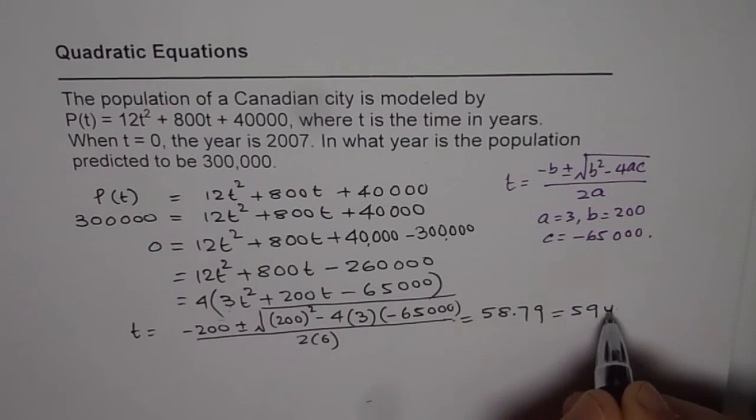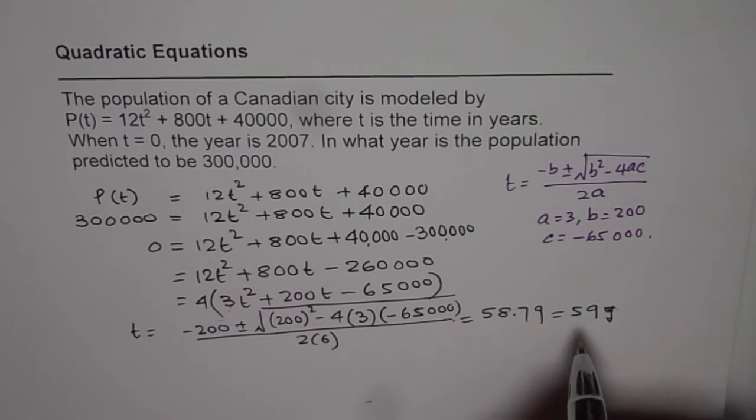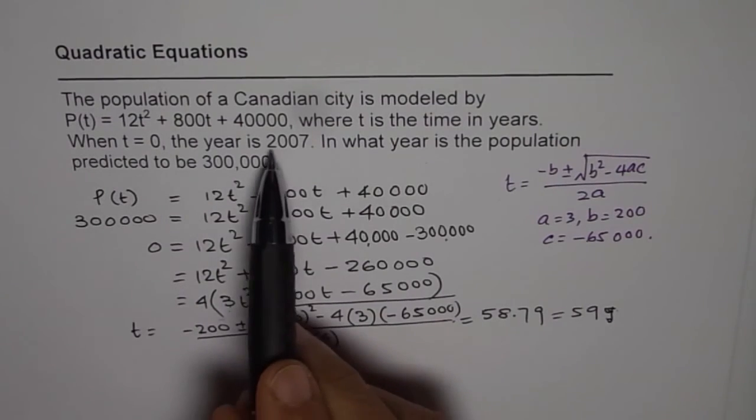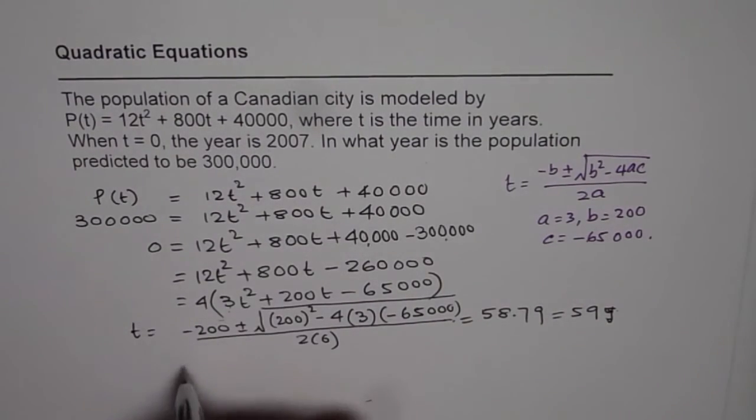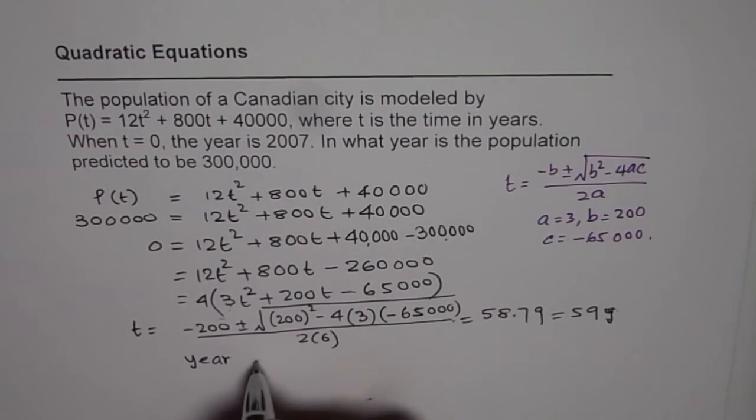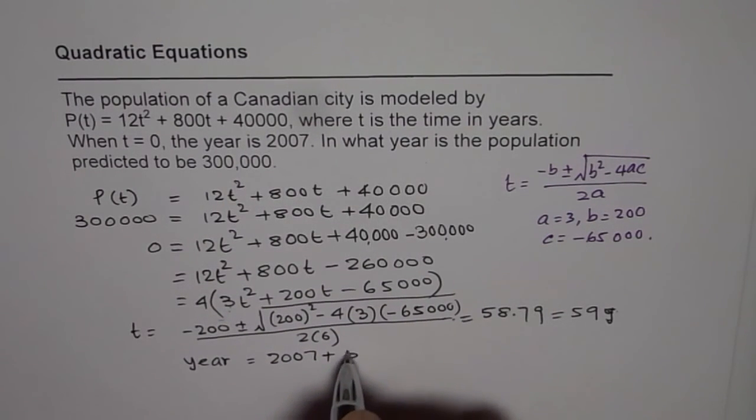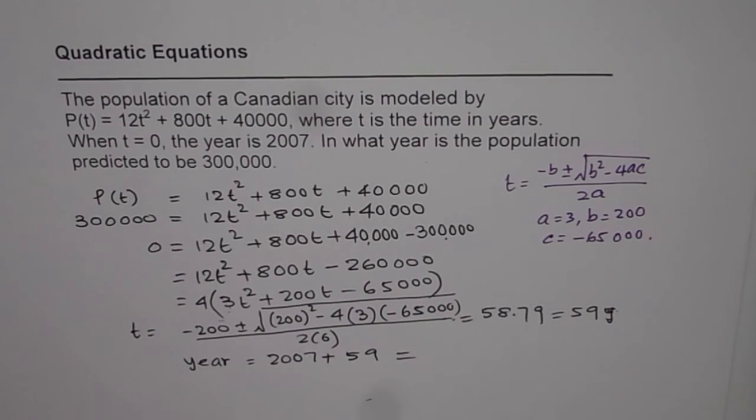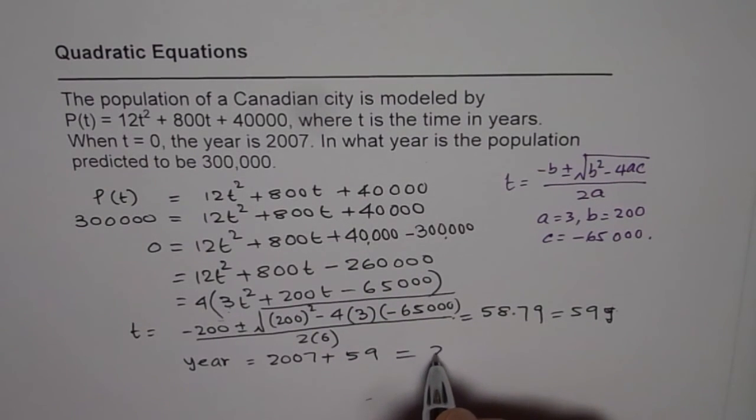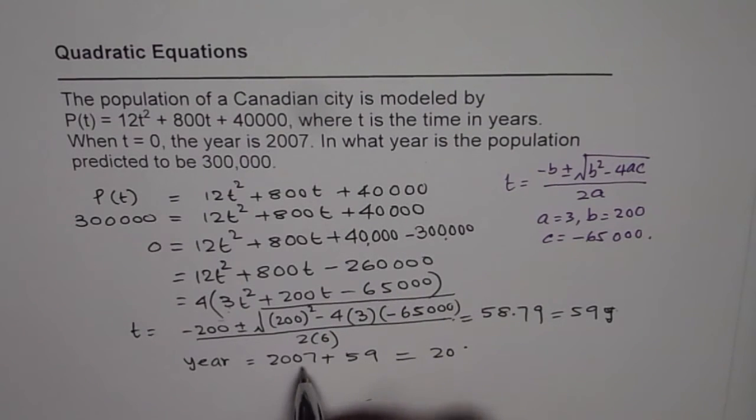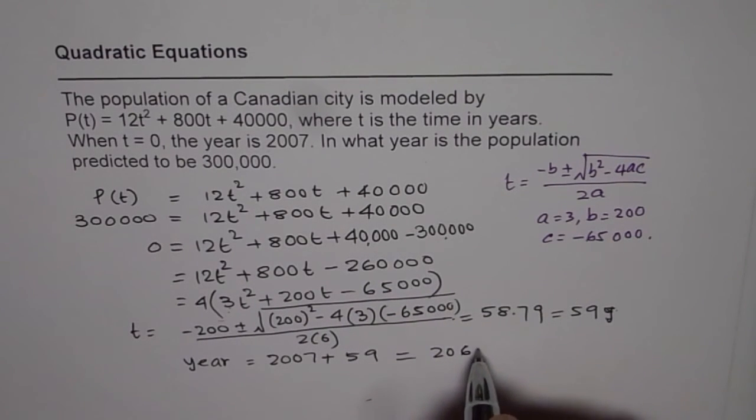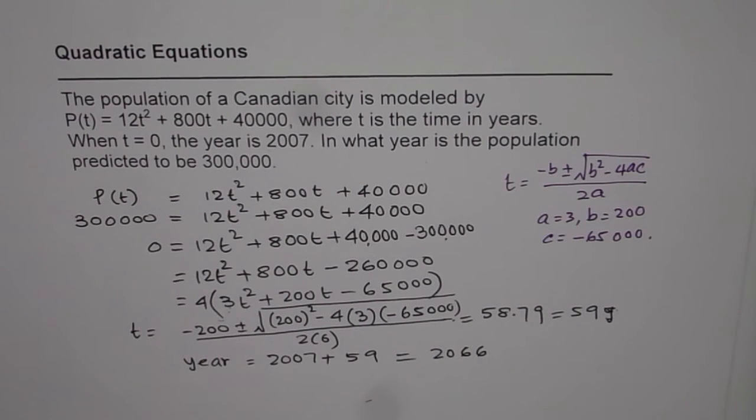So after 59 years, let's say t is 59. Now t is 0 in 2007, so the year should be equal to 2007 plus 59. So it is 2066. So if you add 6 here, 66. So 2066 is the year.